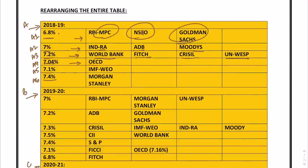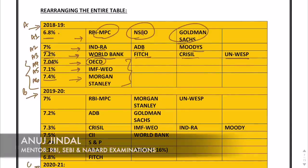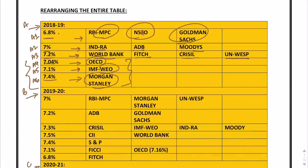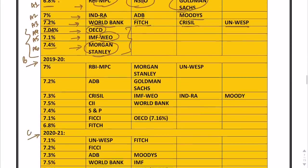7.04% is given by only one organization. You can remember it like this: 7.04%, 7.1%, and 7.4% are each given by one organization — IMF World Economic Outlook and Morgan Stanley respectively.